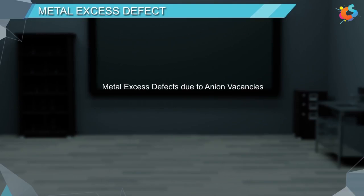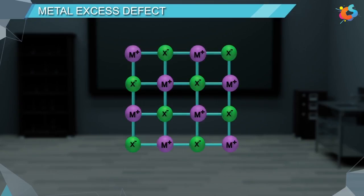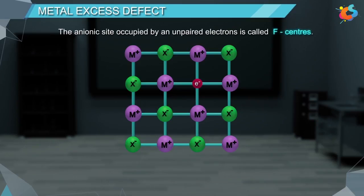Metal excess defects due to anion vacancies. In an anionic solid, an anion may be missing from its lattice site, leaving a hole which is occupied by an electron to maintain electrical neutrality. The anionic site occupied by an unpaired electron is called F-centers, where F stands for Farbenzenter, which is a German word for color center.